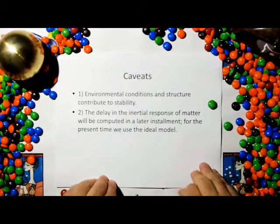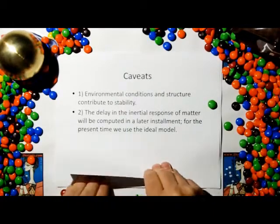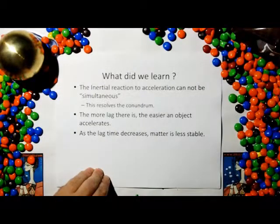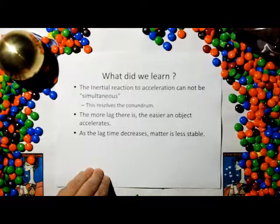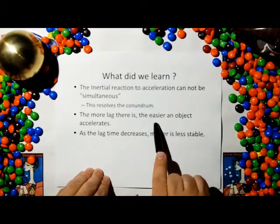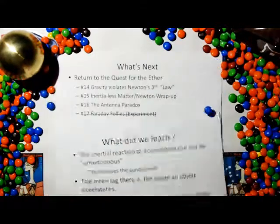And again, environmental conditions and structures contribute to stability. The delay in the inertial response of matter will be computed in a later installment. For the present time, we're just going to use the ideal models. So what did we learn? The inertial reaction to accelerate an object cannot be simultaneous. This resolves the conundrum. The more lag there is, the easier an object accelerates. As the lag time decreases, matter becomes less stable.